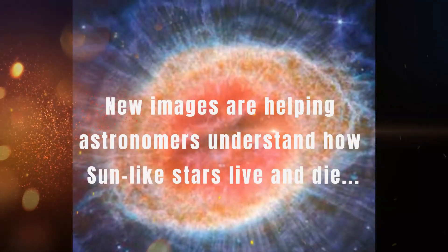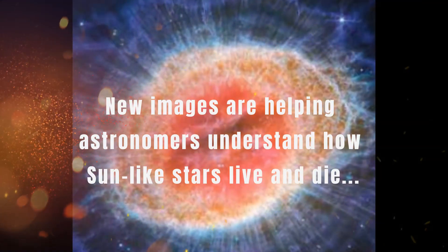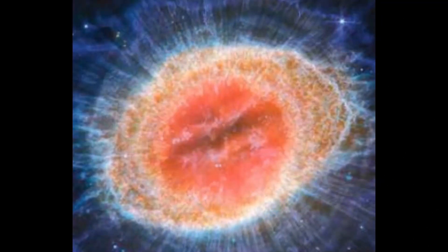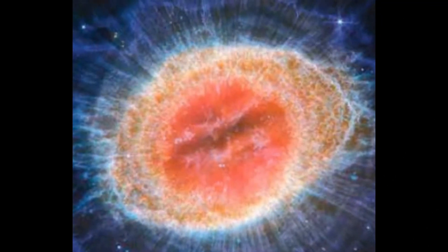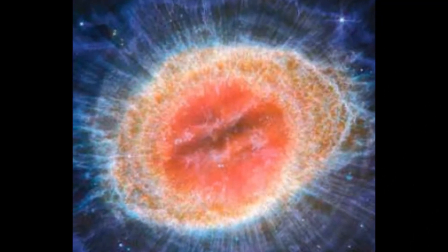The Ring Nebula, M57, 2200 light-years away in Lyra, is one of the most famous planetary nebulae at the final stages of a dying sun-like star, shedding its outer layers.